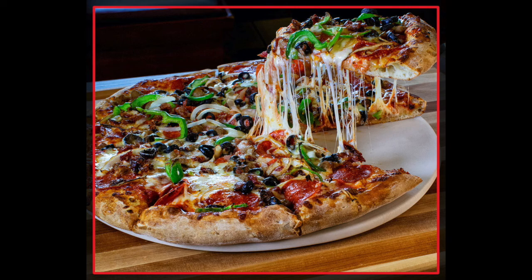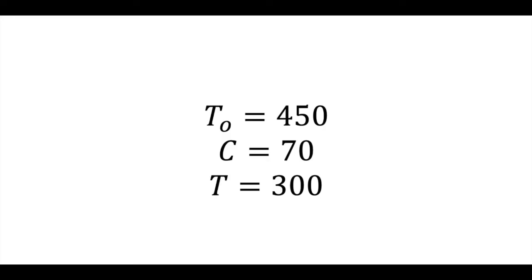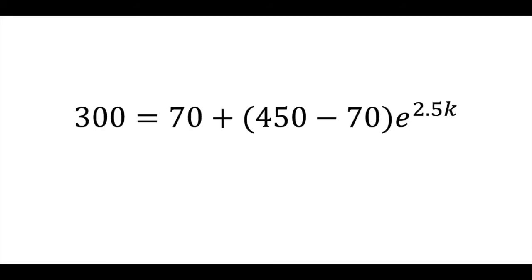Set up the known values. 450 was the original temperature. Room temp is 70. Current pizza temperature is 300. So, 300 equals 70 plus 450 minus 70 times E to the 2.5K.